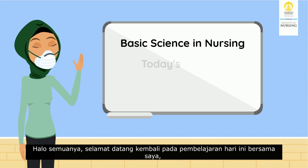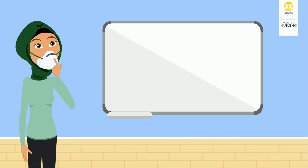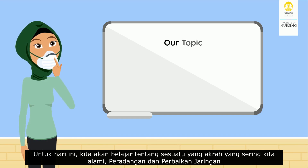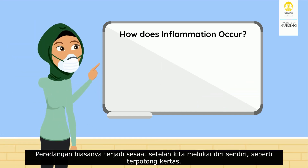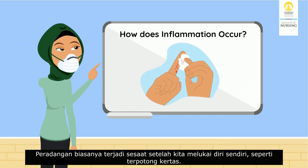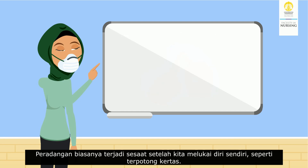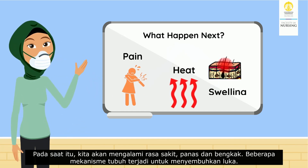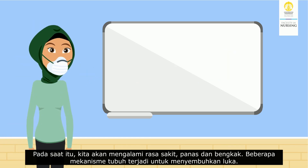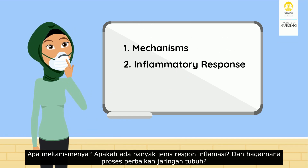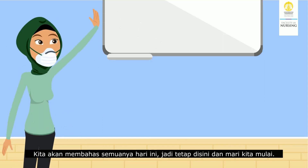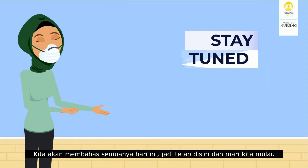Hello everyone, welcome back! Today we are going to learn about something familiar that we often experience: inflammation and tissue repair. Inflammation usually occurs shortly after we injure ourselves, like a paper cut. In that time we experience pain, heat, and swelling, and several body mechanisms occur to heal the wound. We will cover what the mechanism is, how many types of inflammatory response there are, and how the process of repairing body tissues works. So stay tuned and let's begin.